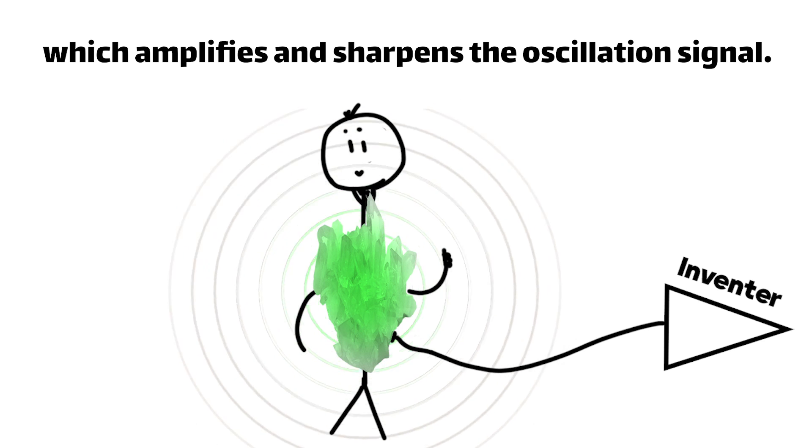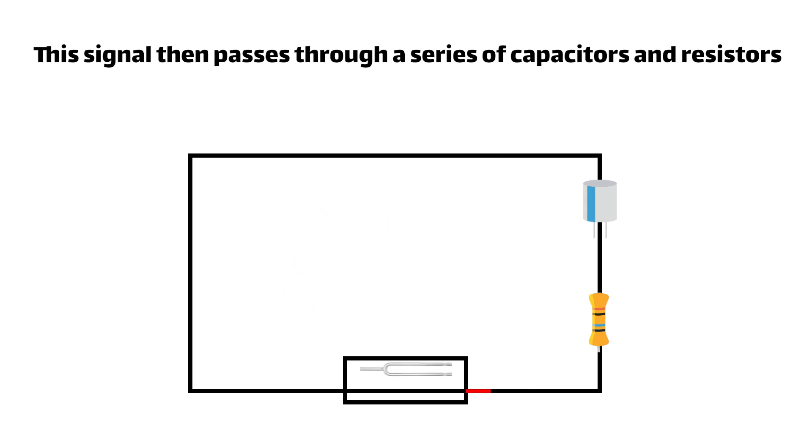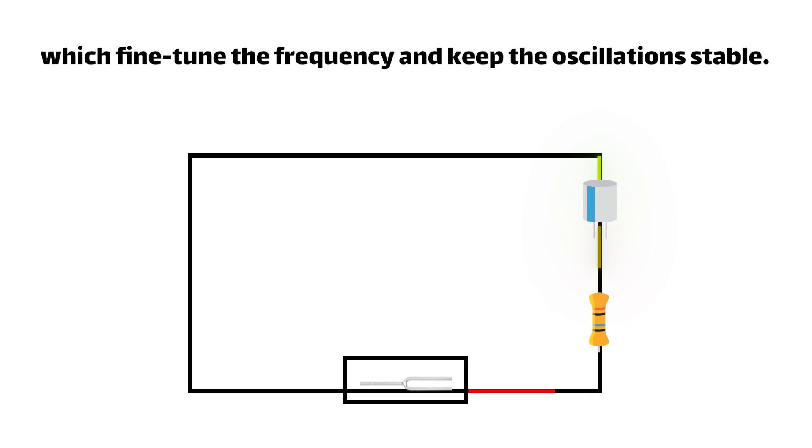The quartz crystal is connected to an inverter, which amplifies and sharpens the oscillation signal. The signal then passes through a series of capacitors and resistors, which fine-tune the frequency and keep the oscillations stable.